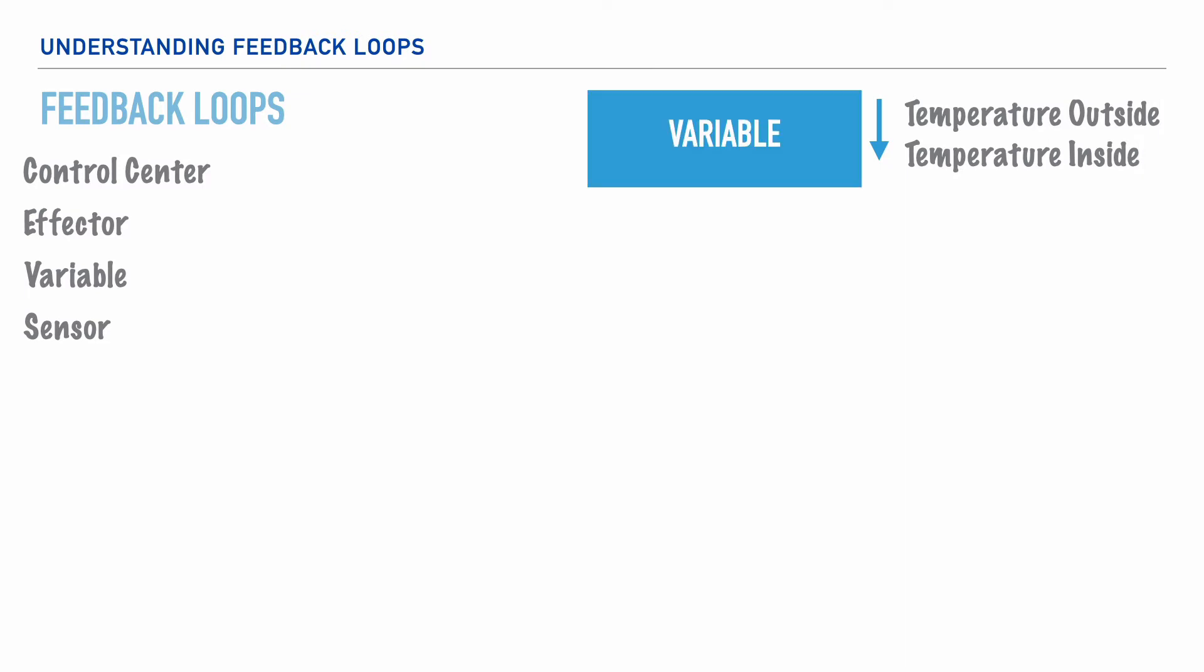So, this decrease in temperature is noted by the thermometer that's contained within your thermostat. So, the thermometer is sensing that the temperature inside your home is 73 degrees. And because the thermometer is the component that notices the change, it is referred to as the sensor because it sensed a decrease in the temperature.